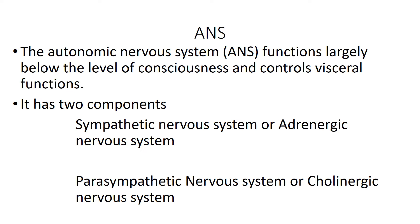The autonomic nervous system has two components. The first is the sympathetic nervous system, also called the adrenergic nervous system. It is called adrenergic because the neurotransmitter in the sympathetic nervous system is adrenaline — a catecholamine and the major neurotransmitter.